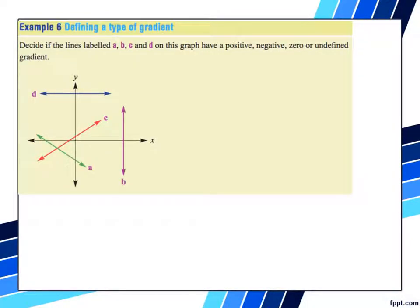The sides of this line labeled ABCD on this graph have a positive, negative, zero, or is it undefined? I'm going to do A first. As I read from left to right over A, as I read from left to right, A is coming down. Therefore, A is negative.